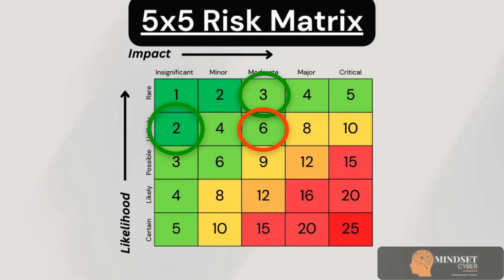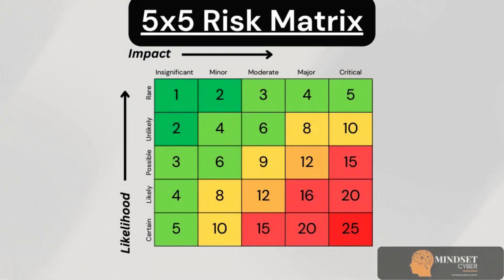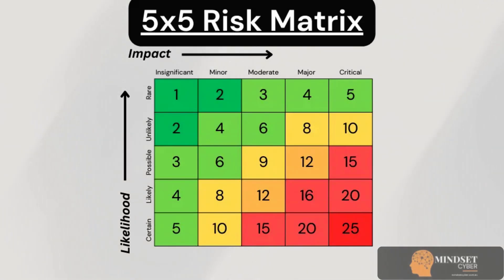You can then apply your risk acceptance criteria. For example: one to six are low risk — you may look at accepting these. Eight to 14 is moderate — you may want to monitor or put some mitigations in place to lower the score. Fifteen or higher is high risk — you need to treat those in some way.